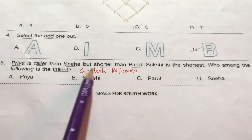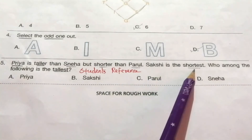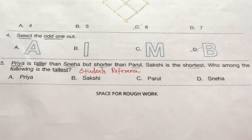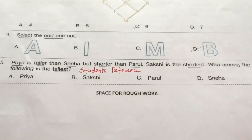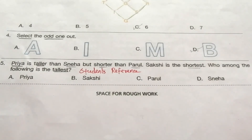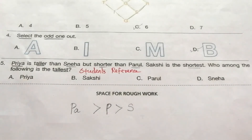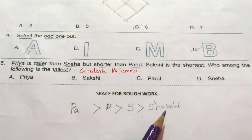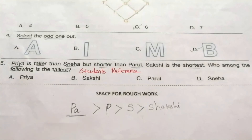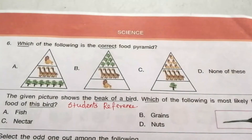Question 5: Priya is taller than Sneha but shorter than Parul. Sakshi is the shortest. Who among the following is the tallest? Reading the statements: Priya is taller than Sneha, Priya is shorter than Parul, and Sakshi is shorter than Sneha. So the tallest is Parul. Our answer is C, Parul.